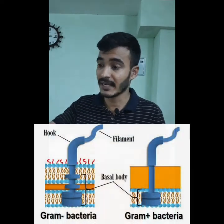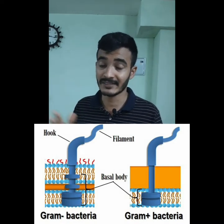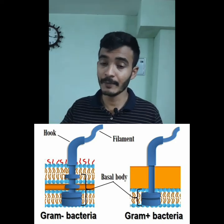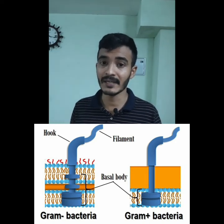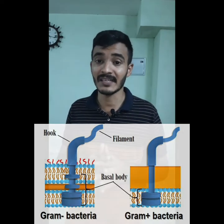The rings of the basal body come in pairs — an inner ring and an outer ring. The number and arrangement of rings differs between gram-positive and gram-negative bacteria. Gram-positive bacteria have two rings, while gram-negative bacteria have more rings.